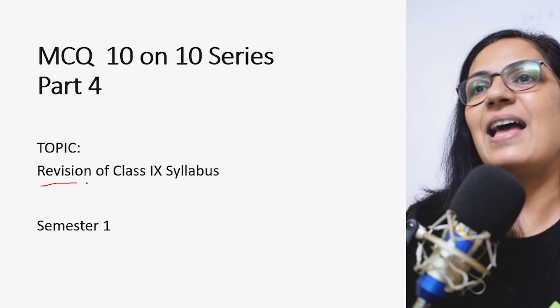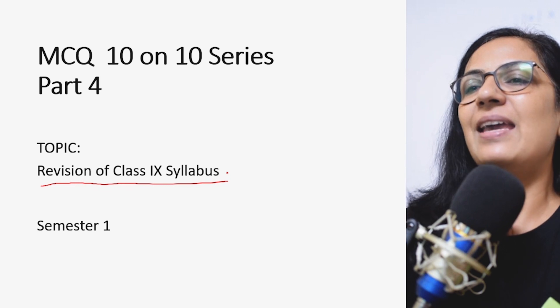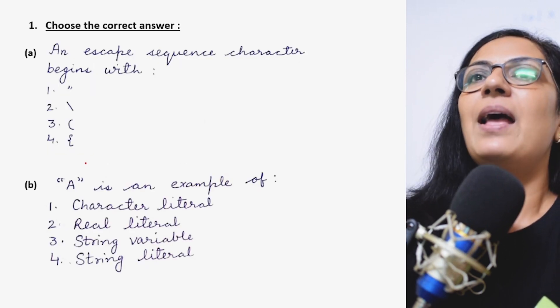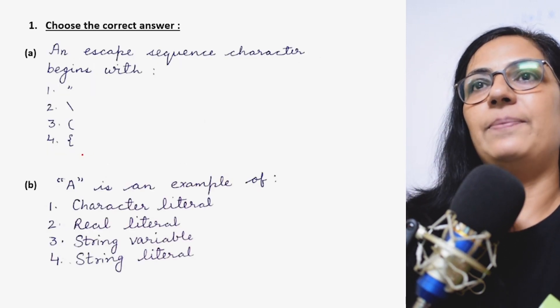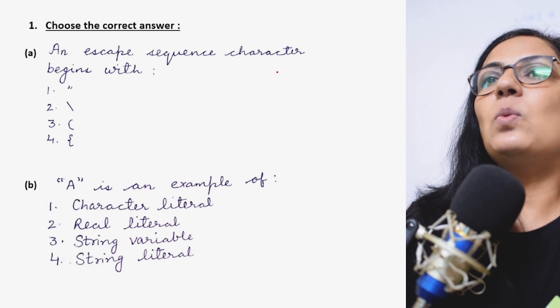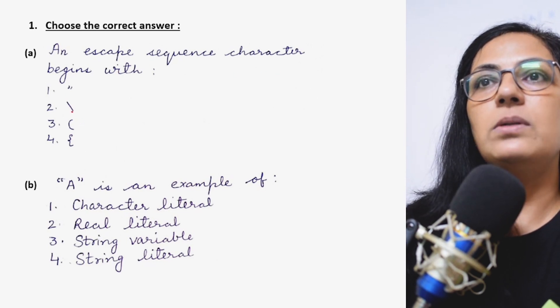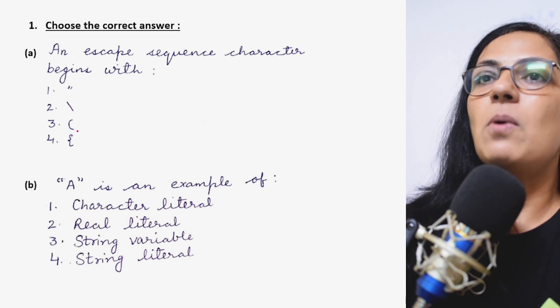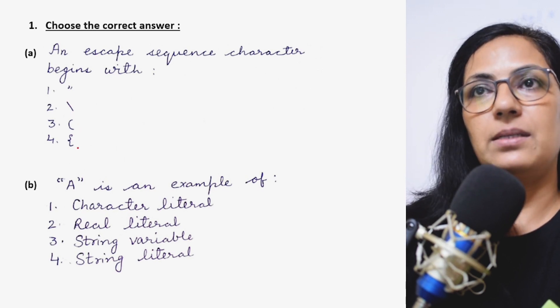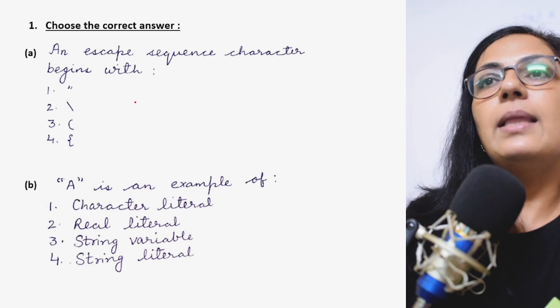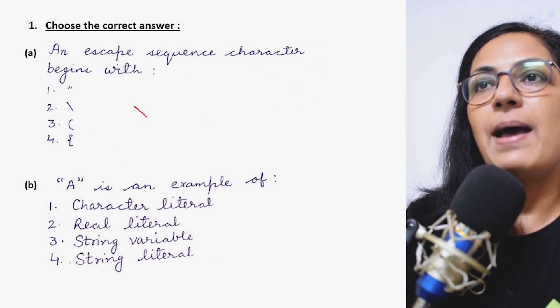Let us start with our MCQ 10 on 10 series part 4. The topic is revision of class 9 syllabus, semester 1. Here is the first question: Choose the correct answer. An escape sequence character begins with the options are double quotes, backslash, small brackets and curly braces.